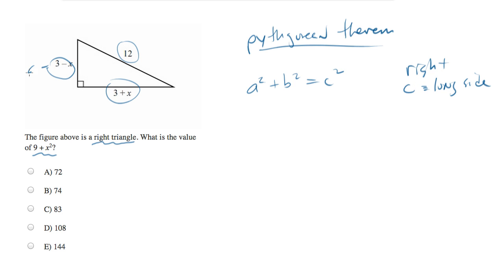So let's call this A, this B, and this C. And let's plug in and see what happens. Now we're in the faith-based part of our problem-solving process. So we're going to go 3 minus x squared plus 3 plus x squared equals 12 squared, which is 144.